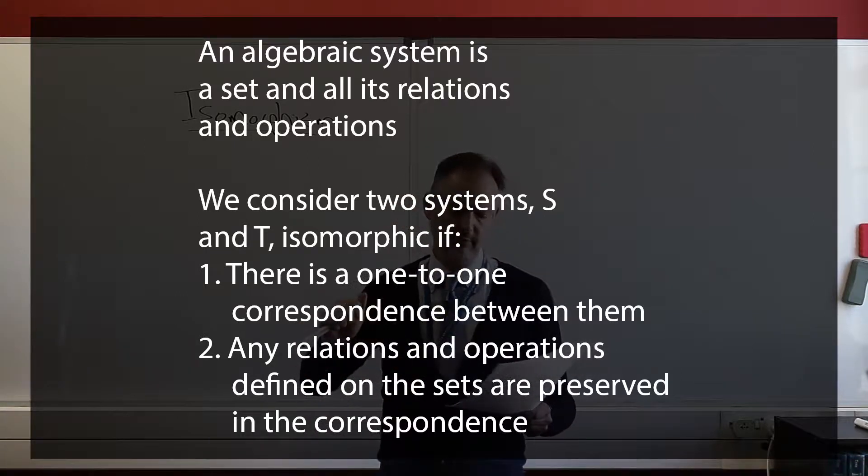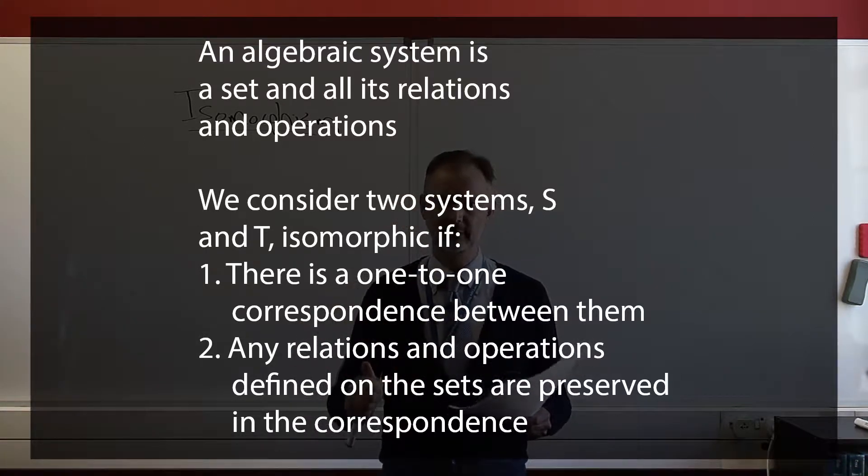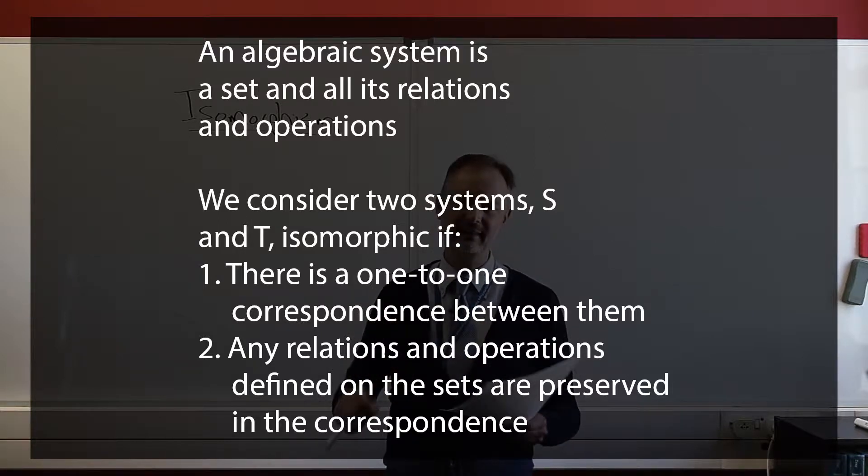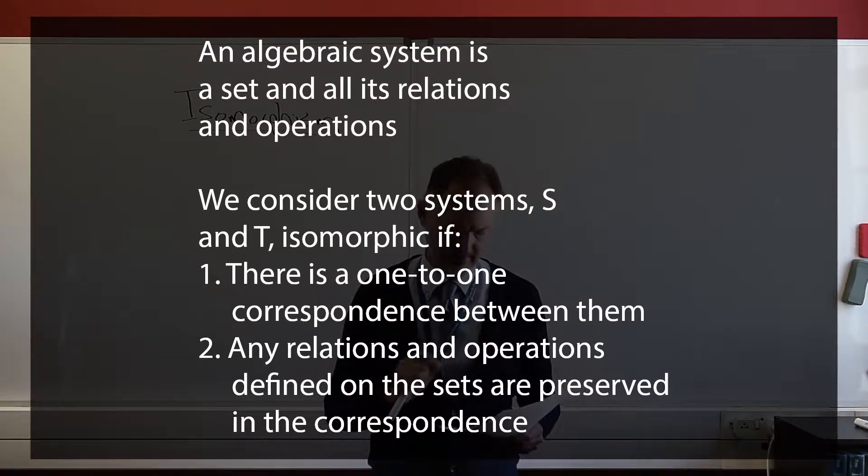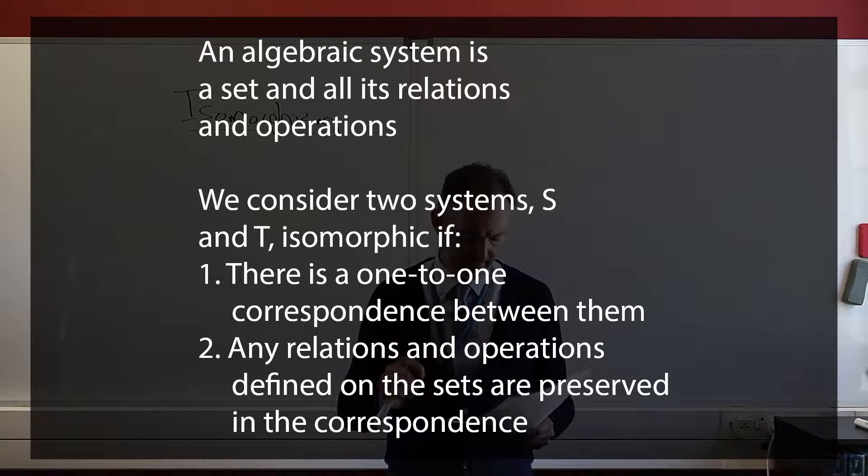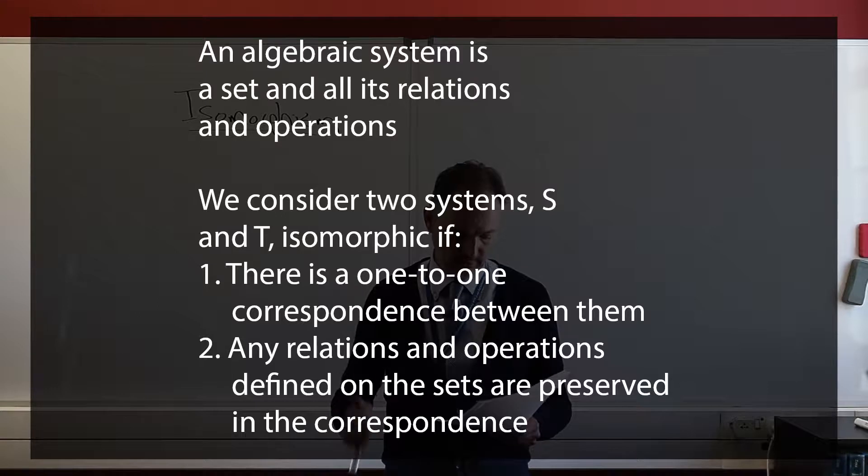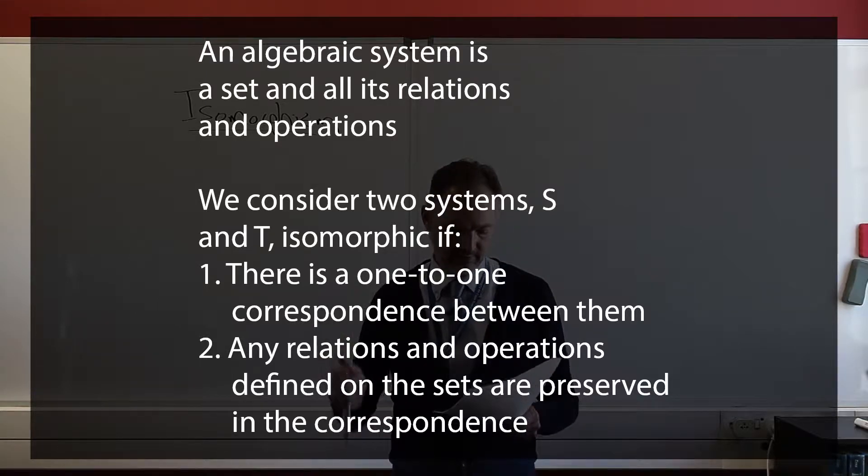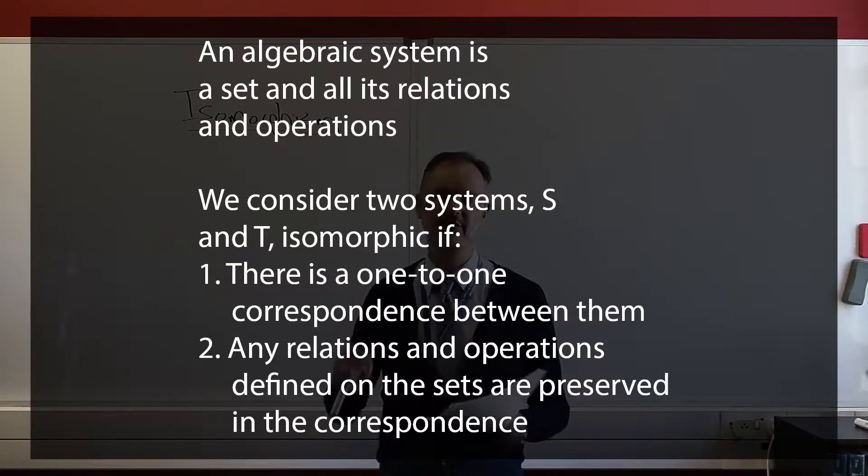Now, if we consider two such algebraic systems S and T, we consider them isomorphic, isomorphic algebraic systems, if there is a one-to-one correspondence between them, that's number one, and number two, any relations and operations defined on the sets are preserved in this correspondence.